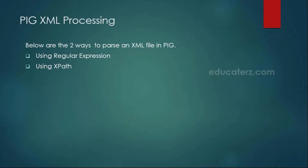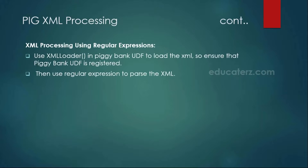For XML processing, whatever XML file you have, you can process that file using two different ways: one is using regular expressions, and the other one using XPath. The first one, using regular expression, you can first load the XML file into the Hadoop distributed file system, and then you have to use a load command. Instead of a normal Pig storage method, what we will be seeing here is something called an XML loader.